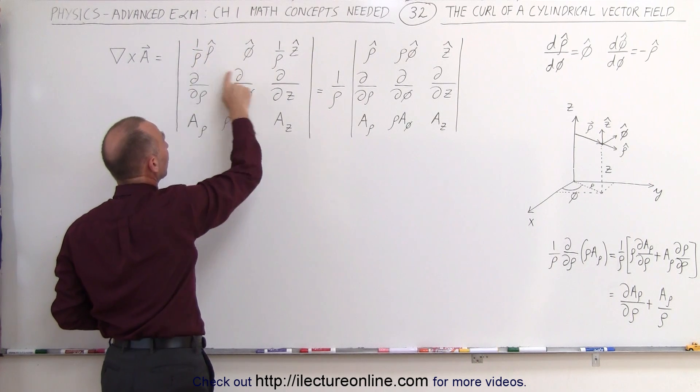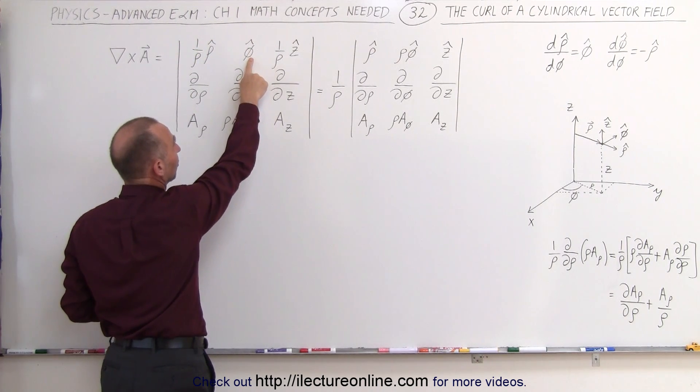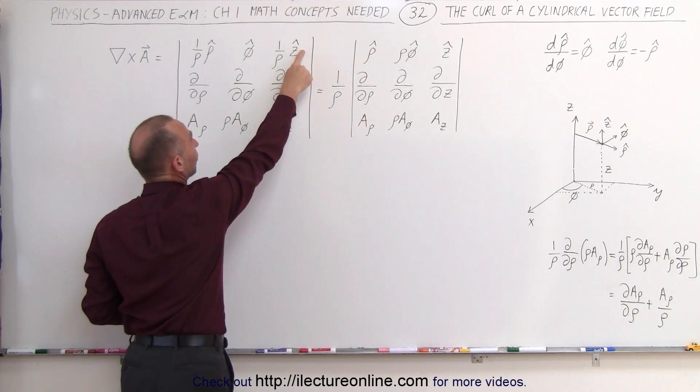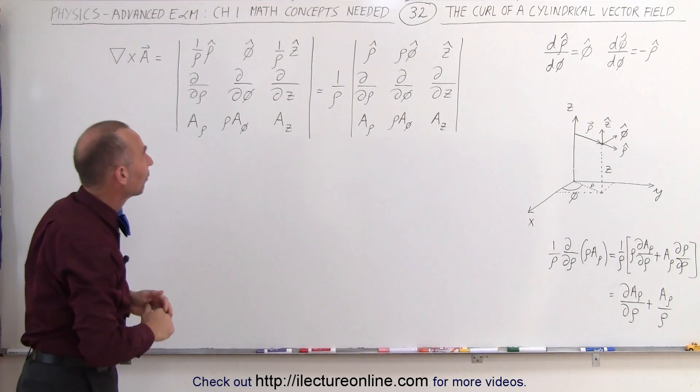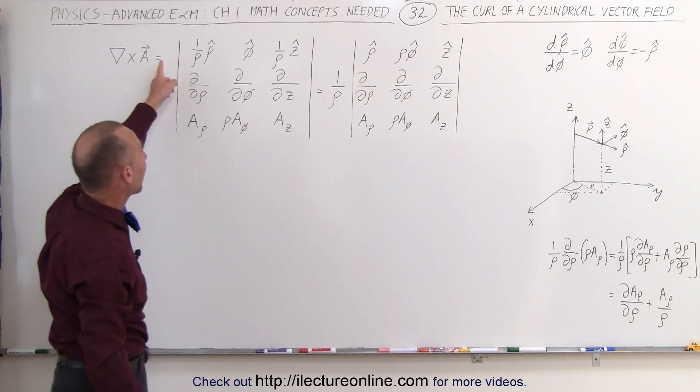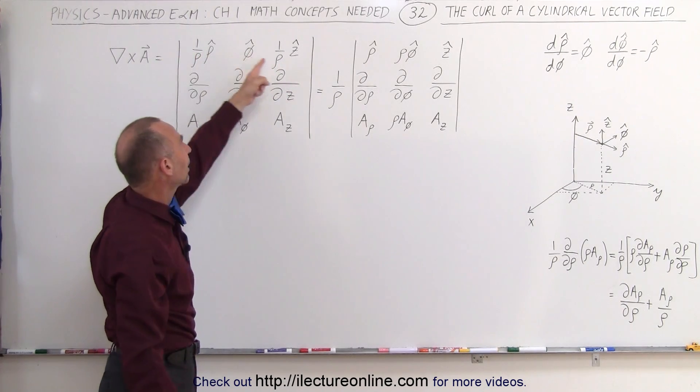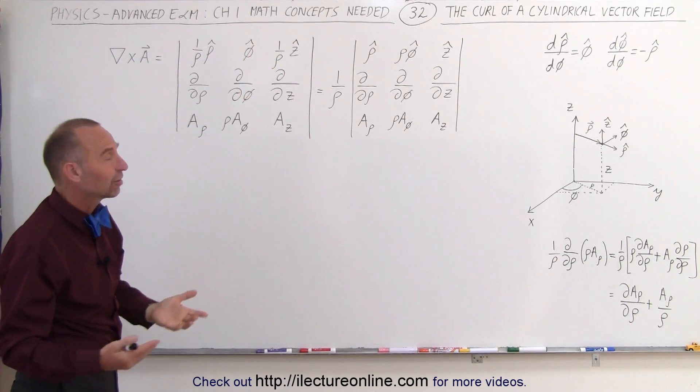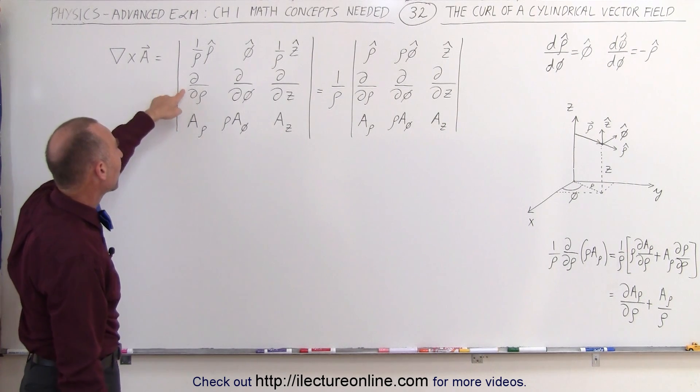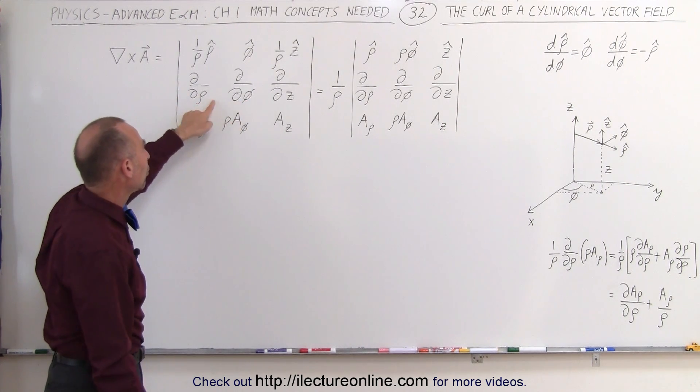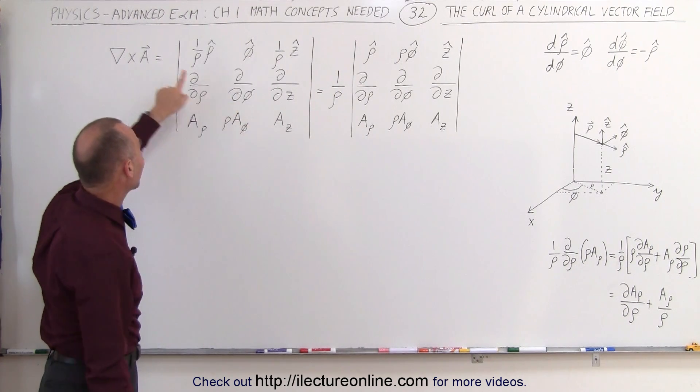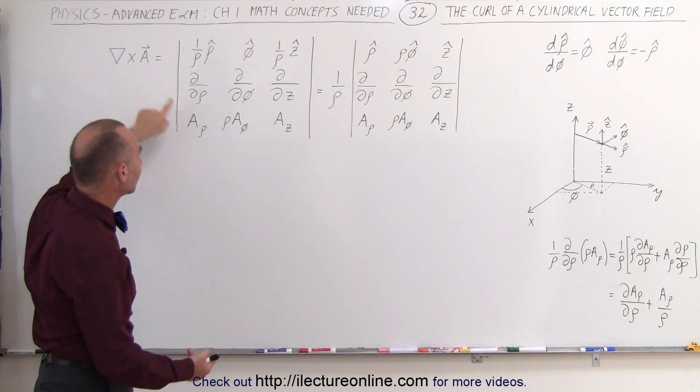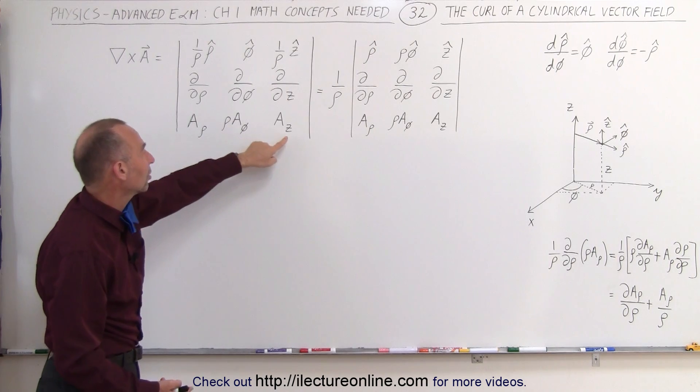This has a non-unit component because it's in radians, and z, which has a unit of length, divided by row. Again, the units of length disappear, and we simply have an entire row here that has units of radians, which is basically a non-unit. Then we have the partial respect to the three dimensions, row, phi, and z, and then we have the components of the vector quantity over the vector field in the row direction, the phi direction, and the z direction.